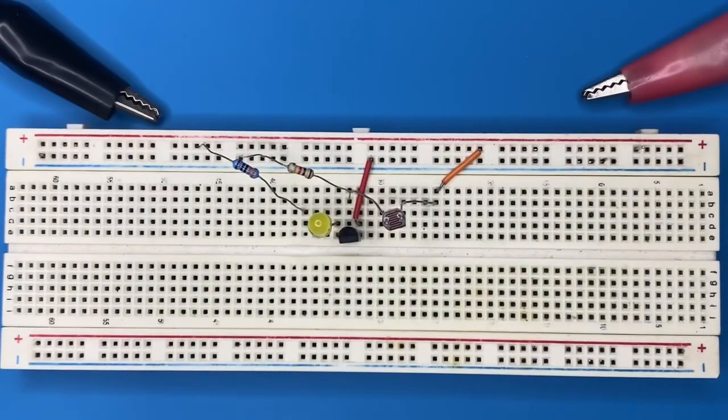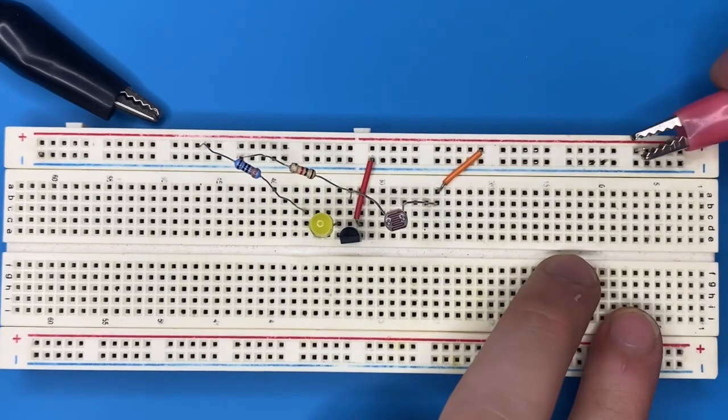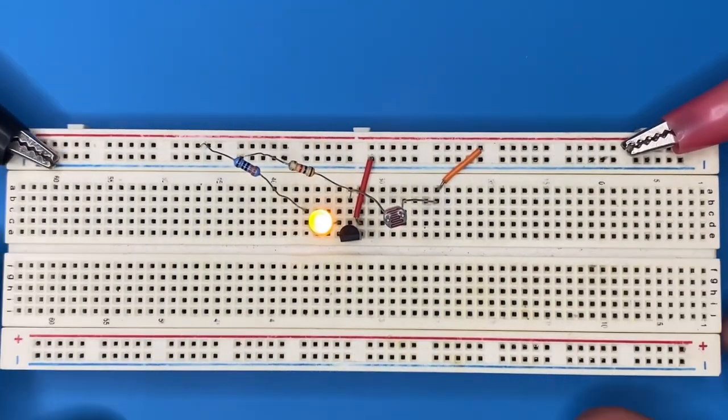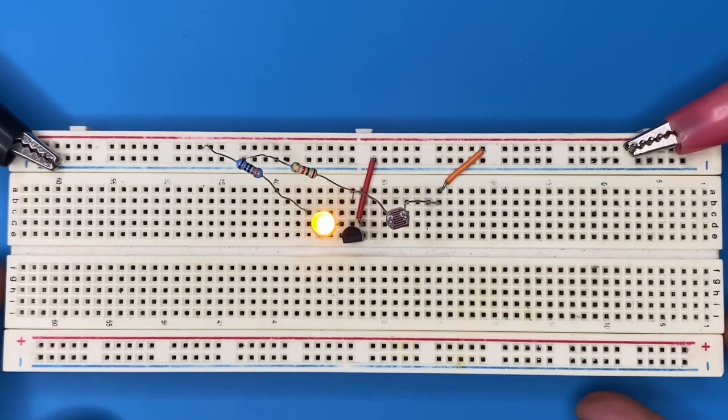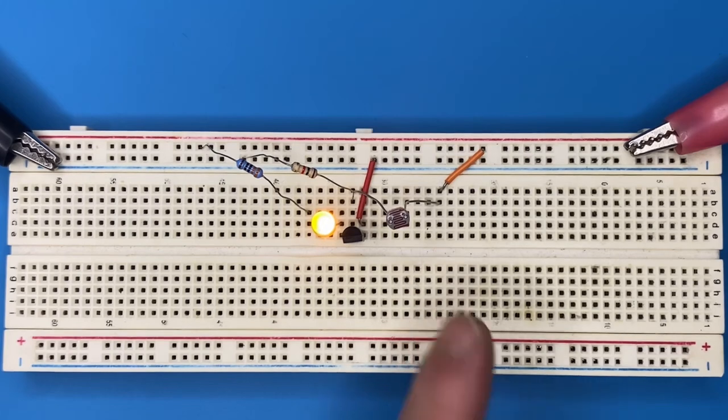Finally, let's connect the 5 volt power supply to the breadboard. As you can see, the LED turns on. Here's the explanation: the LDR's resistance changes with light intensity.